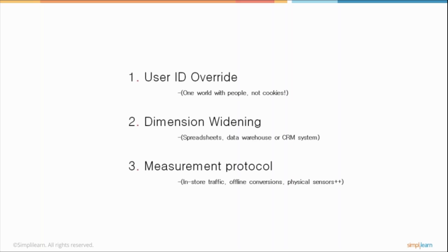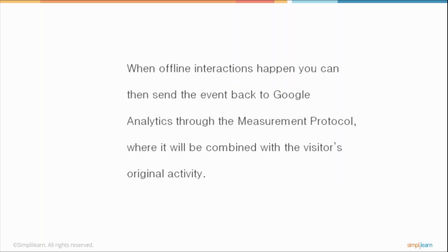We talked about how User ID override helps you look at your data from a more personable standpoint — more than just a number. You can see demographics, gender, the device they're using, their likes and dislikes. This helps to widen the dimensions by which you're analyzing your data. Google Analytics also gives you a measurement protocol by which you can track in-store traffic, offline conversions, and physical sensors. When offline interactions happen, you can send that event back to Google Analytics through the measurement protocol. This can be combined with the visitor's original activity when you use the User ID override, painting a very complete picture of your consumer base.